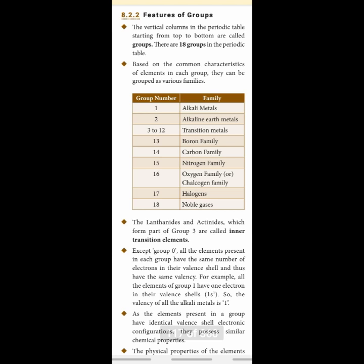The lanthanides and actinides, which form part of group three, are called inner transition elements. If you see the periodic table, at the bottom there are two rows — these are called inner transition elements: lanthanides and actinides. Except group 18, all elements present in each group have the same number of electrons in their valence shell and they have the same valence.